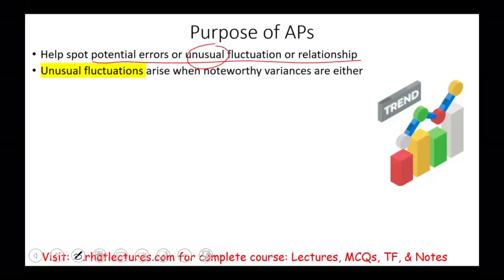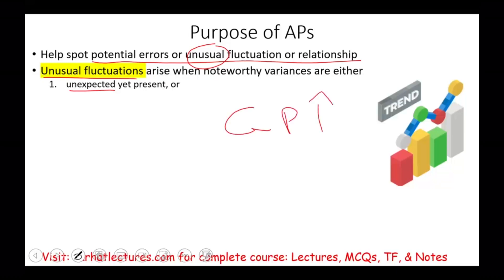How do we identify unusual fluctuation or unusual relationships? It arises when one of two things happen: the fluctuation is unexpected yet present — we saw something we shouldn't have, such as gross profit margin going up or down substantially — or we expected to see something but it was absent. You can apply this to any ratio or figure.